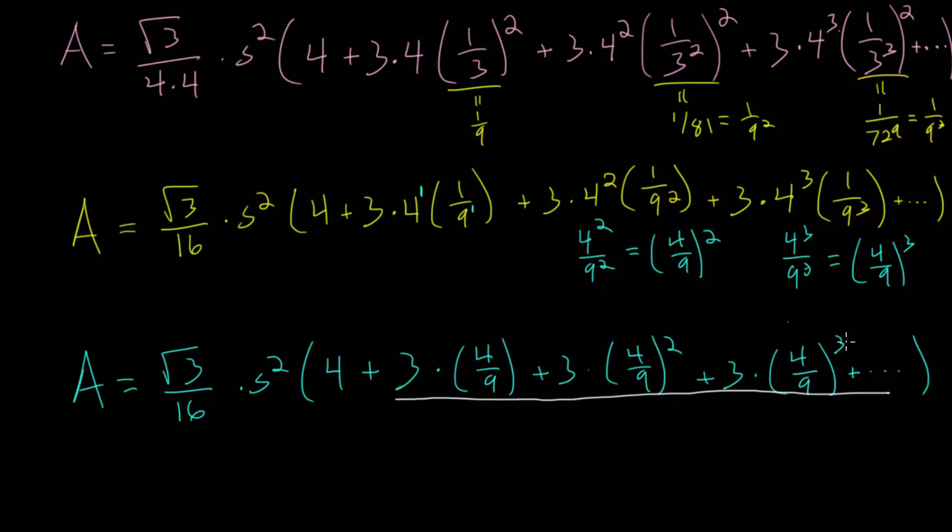From one term to the next, we are multiplying by the same number. We are multiplying by 4 over 9. And since we have that common ratio, that same number we are multiplying by to go from one term to the next in the sum,